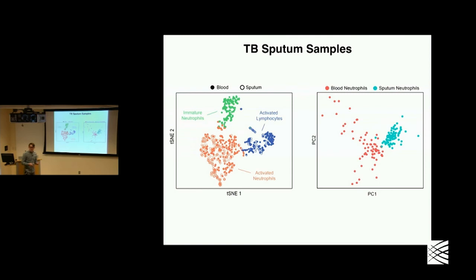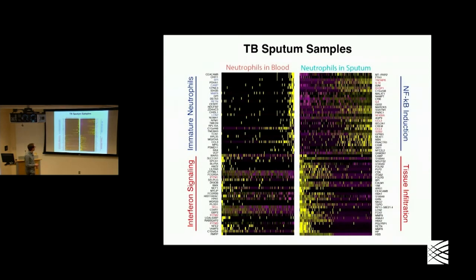One thing to note is that neutrophils don't typically survive a freeze-thaw cycle, so we're able to reach cell types that we wouldn't otherwise be able to profile using other techniques if these samples were shipped over here. This further highlights the differences we're seeing in neutrophils between blood and sputum.